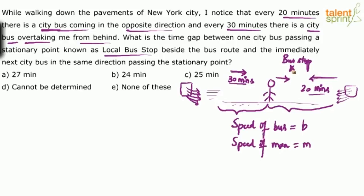There is a bus stop — a stationary point. We need to find the time gap between one bus passing it and the next bus in the same direction passing it. Now, if all buses travel at the same speed and leave at regular intervals from both sides, why are the times different? Obviously, because of relative speed: when the two bodies move in opposite directions, the relative speed is the sum of speeds; in the same direction, it is the difference.